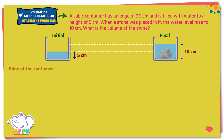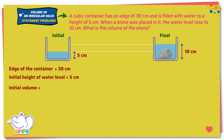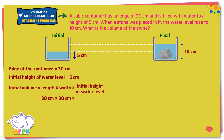The edge of the cubic container equals 30 centimeters. The initial height of the water level equals 5 centimeters. We need to find the volume of the stone. Initial volume equals length times width times initial height of water level: 30 cm × 30 cm × 5 cm = 4,500 cubic centimeters. The final height of the water level equals 10 centimeters.